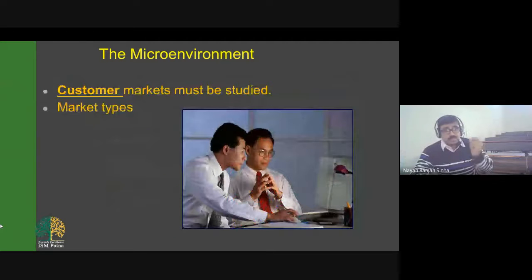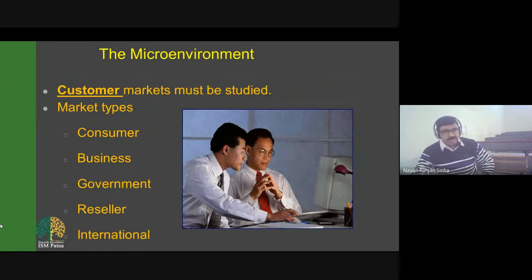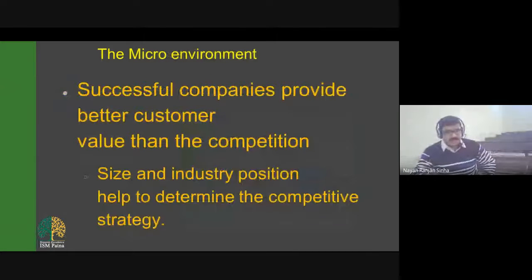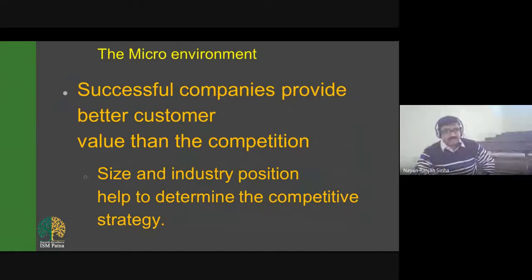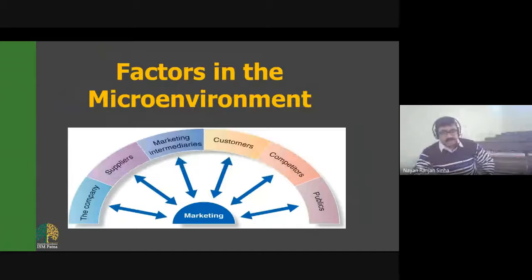The customer is, of course, one of the major stakeholders. In the market we will have different types of customers: individual consumers, business consumers, government, resellers, and international customers. Successful companies provide better customer value than the competition, and size and industry position help determine competitive strategy. Factors in the micro environment include the company, suppliers, marketing intermediaries, customers, competitors, and publics.